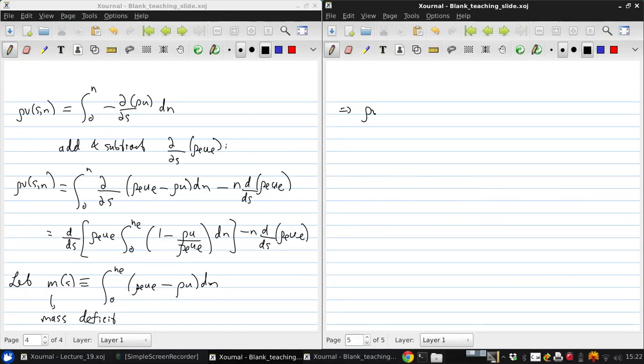Then we get that ρv of (s,n) can be written as just dm/ds minus n d/ds (ρ_e u_e). And again this requires n greater than n_e. And this is for the real flow.